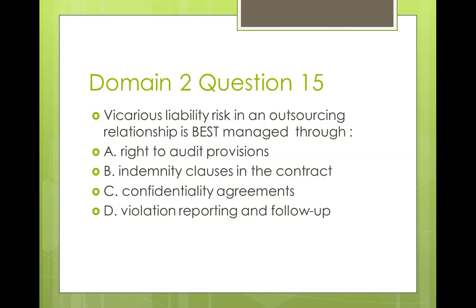Question fifteen: vicarious liability risk in an outsourcing relationship is best managed through A) right to audit provisions, B) indemnity clauses in the contract, C) confidentiality agreements, D) violation reporting and follow-up. Vicarious liability means a master can be held responsible for the wrongdoing of a servant — very applicable in outsourcing contracts. The vendor can make a mistake for which the client is held liable. To safeguard yourself, you use indemnity clauses in the contract. So B is your best answer.